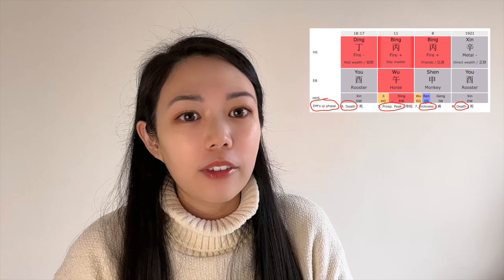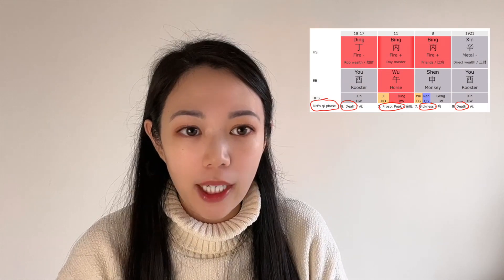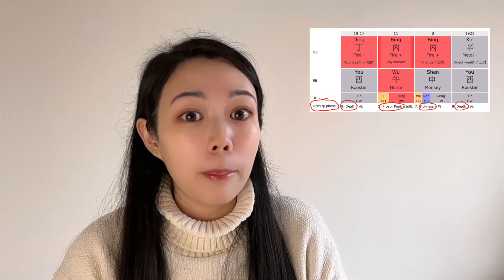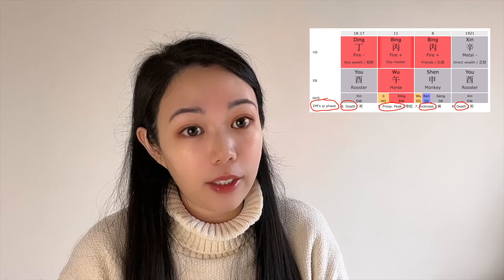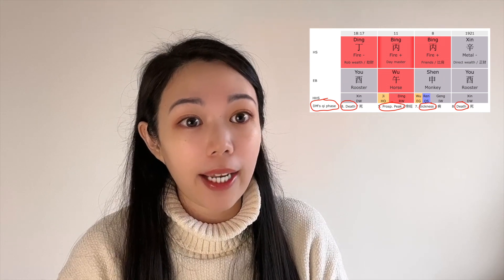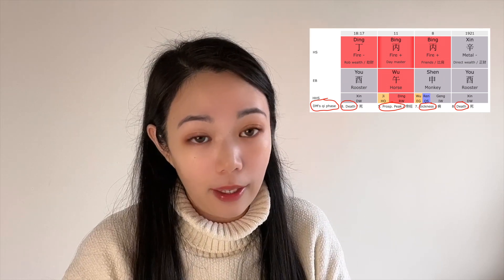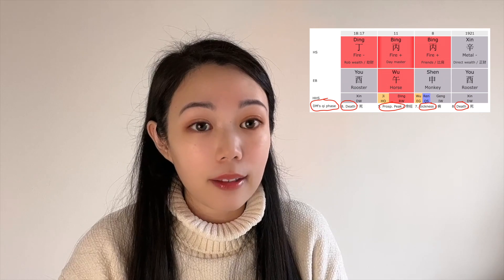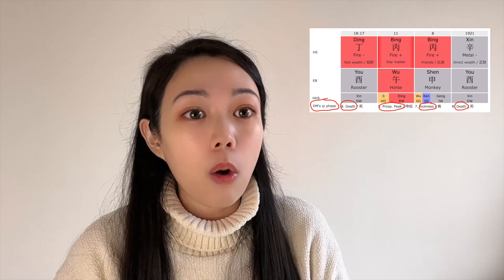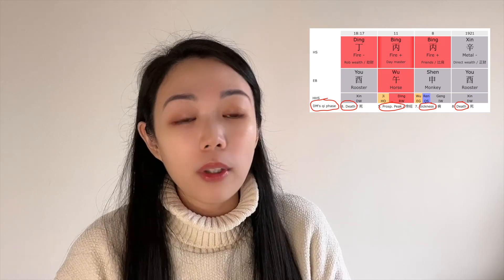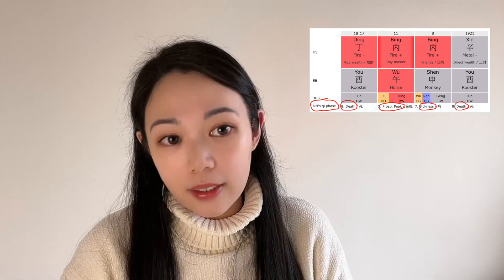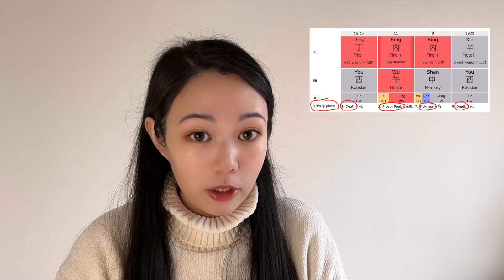What does each earthly branch mean to the heavenly stem element? Most of the time, what you see in the online chart generator, they'll list out the day master's qi phases only. But once you've learned all the qi phases, you can check out other heavenly stems that you have, or the 10 years luck pillar stems you have, or whatever stem that you have — and understand the relationship between the stems and the earthly branches.